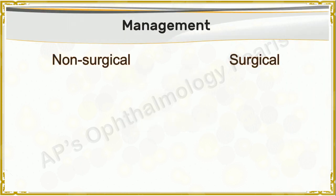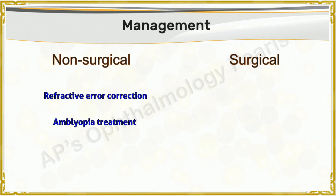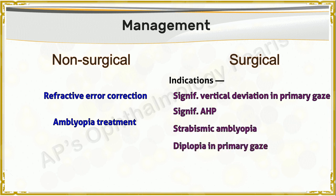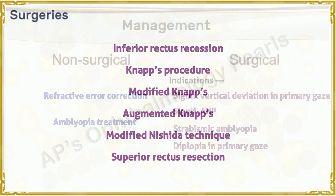Non-surgical management of monocular elevation deficiency consists of correction of refractive error and amblyopia therapy if present. The indications for surgical treatment are: a significant vertical deviation in primary gaze (correction of which will also increase the field of binocular vision), significant abnormal head posture, strabismic amblyopia, and diplopia in primary gaze.